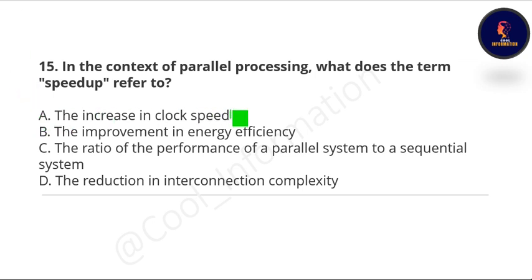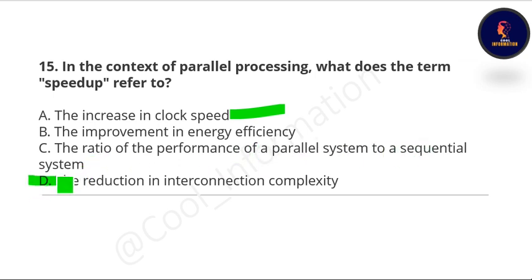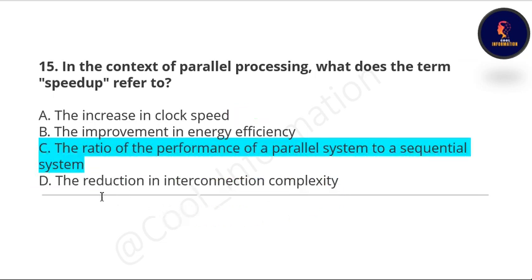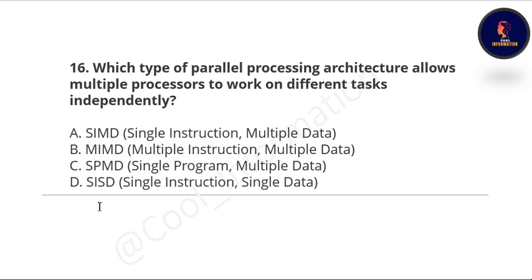Next question: in the context of parallel processing, what does the term speedup refer to? Options are: the increase in clock speed, the improvement in energy efficiency, the ratio of the performance of a parallel system to a sequential system, and the reduction in interconnection complexity. The correct option is C — the ratio of the performance of a parallel system to a sequential system.